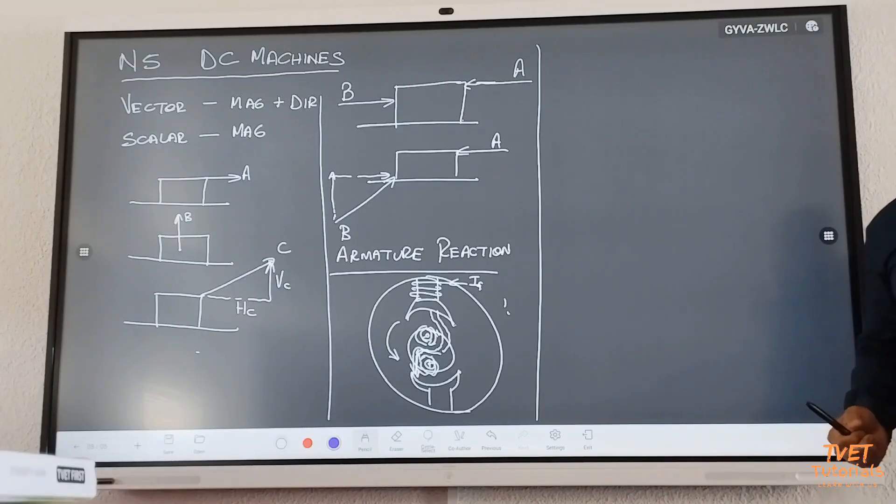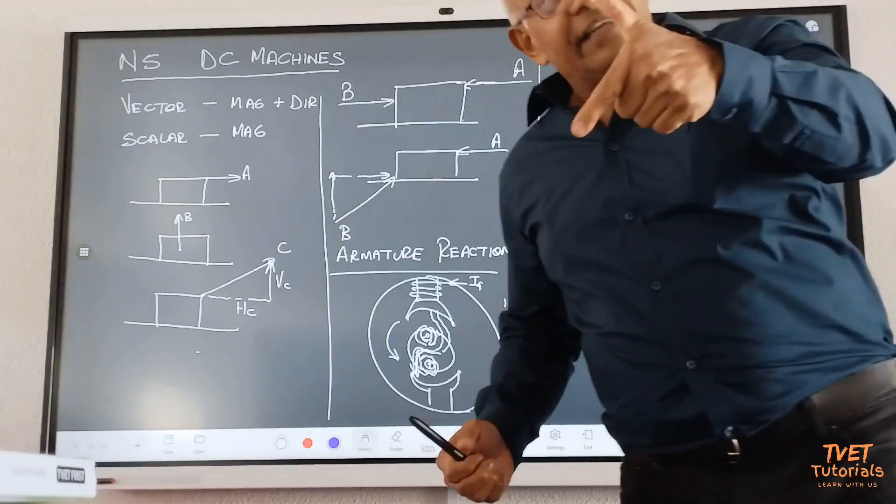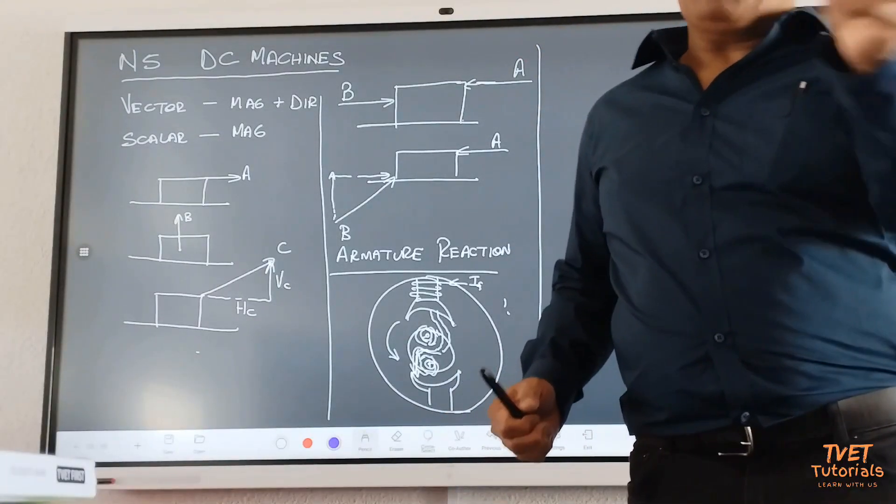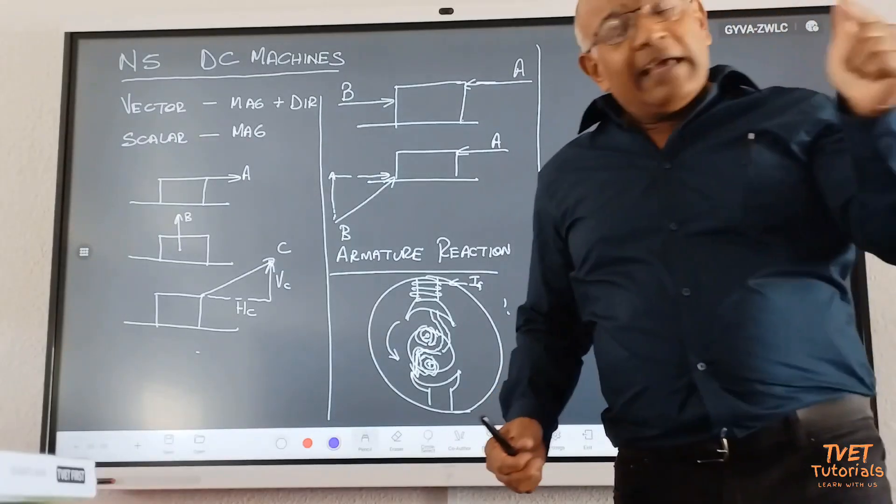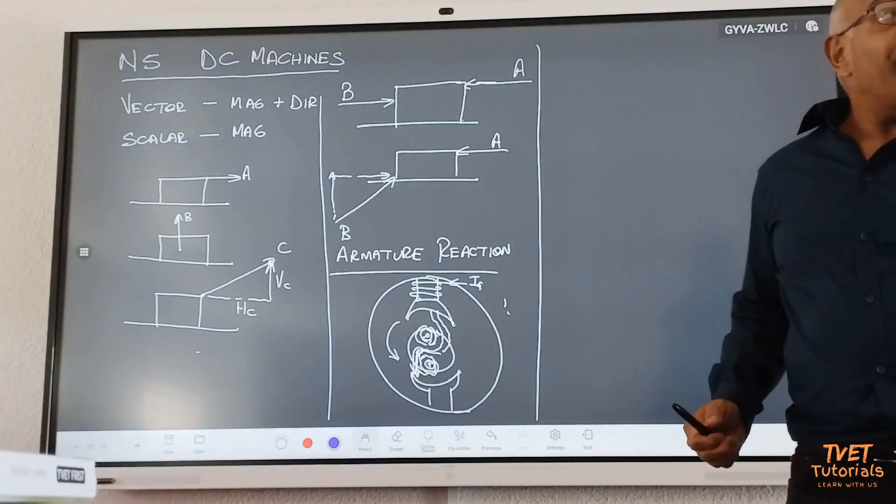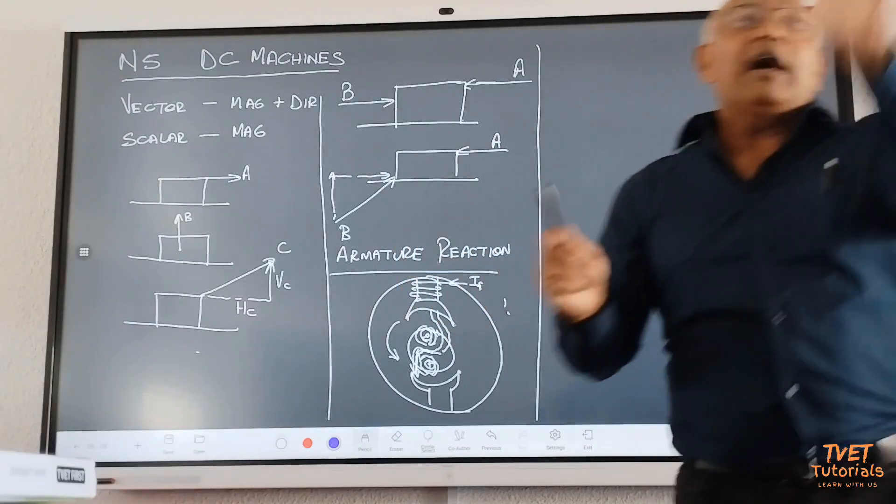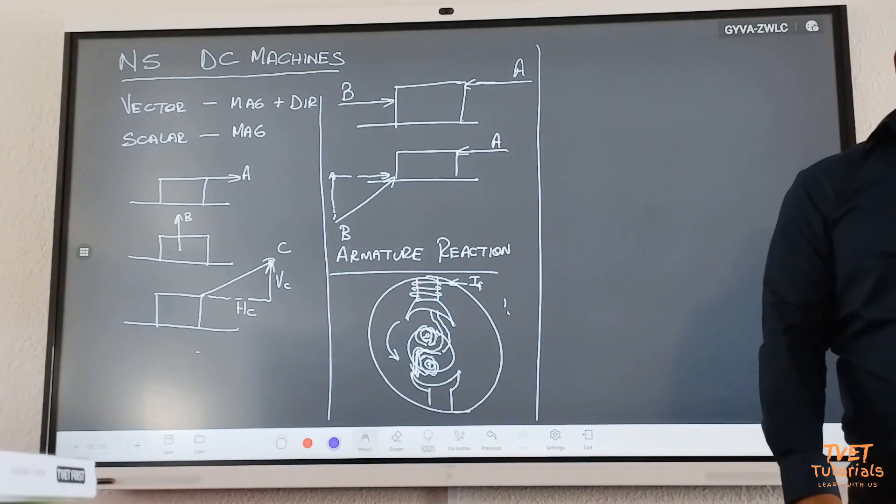How many magnetic fields do I need? Two. Which two? The main and the secondary. Which current produces the main? Because tomorrow in speed control, we're going to refer to this. Which current produces the main magnetic field? The field current. Secondary magnetic field? Armature current.